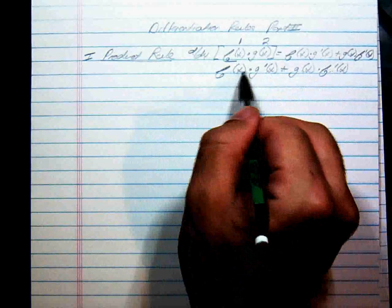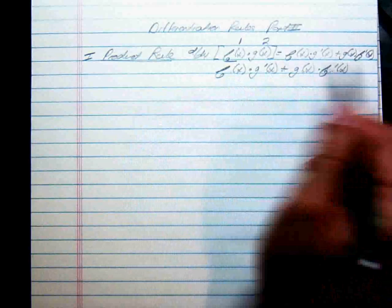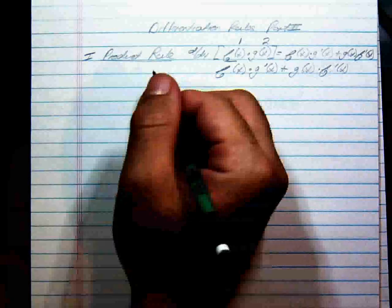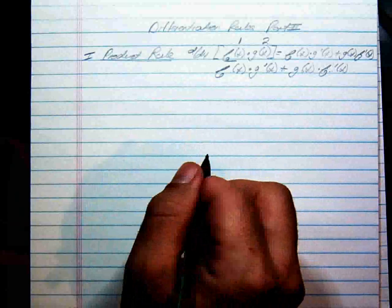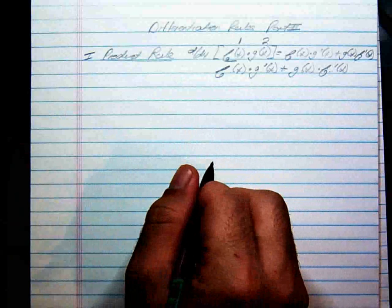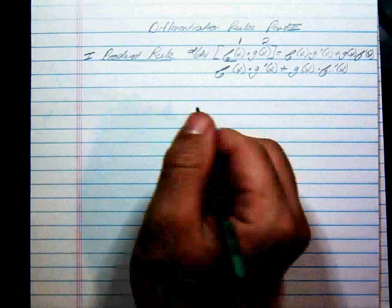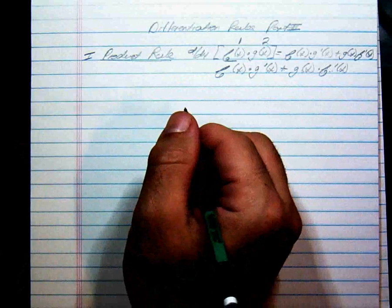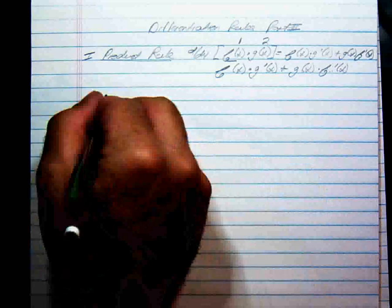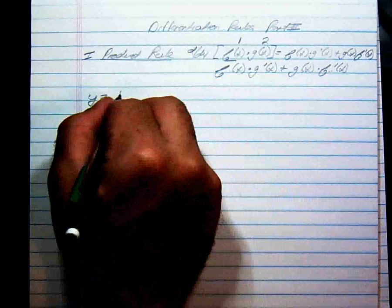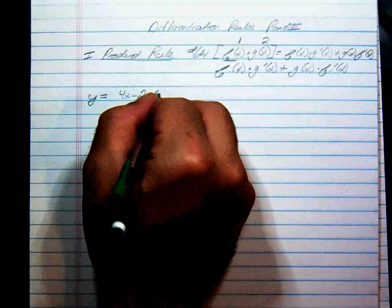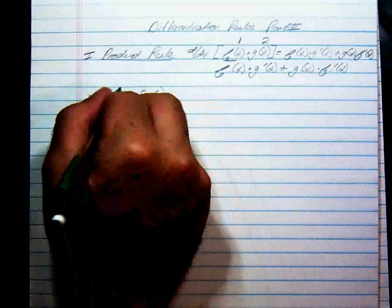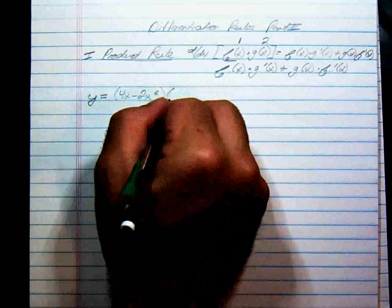Or you can just say f times g prime plus g times f prime, whatever blows your hair back. Let's say y is equal to 4x minus 2x squared, times 3x minus 5.